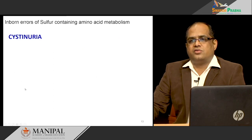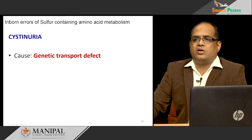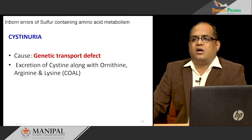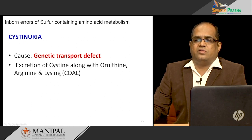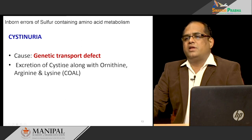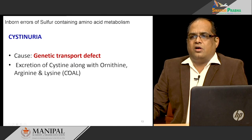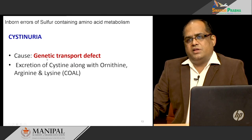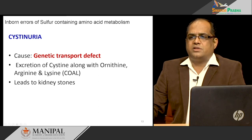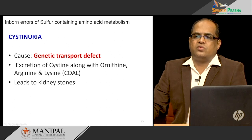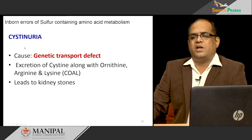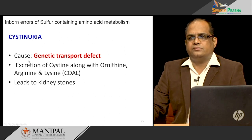The other disorder associated is cystinuria. Here the cause is a genetic transport defect — excretion of cysteine along with ornithine, arginine, and lysine, abbreviated as COAL (Cysteine, Ornithine, Arginine, Lysine). There is a defect in reabsorption of cysteine in the kidney: it is not reabsorbed and is excreted in the urine. This leads to cysteine precipitates, causing renal stones. Cystinuria is most commonly associated with renal stones due to precipitation of cysteine in the urine.